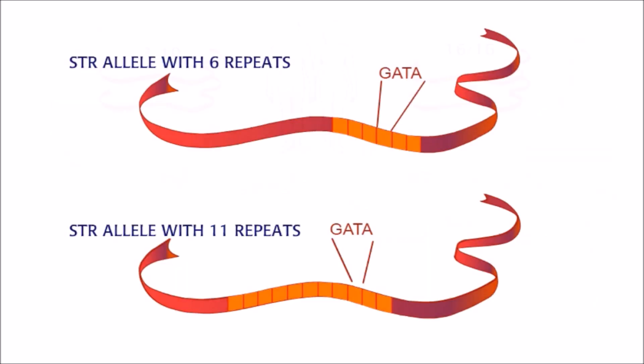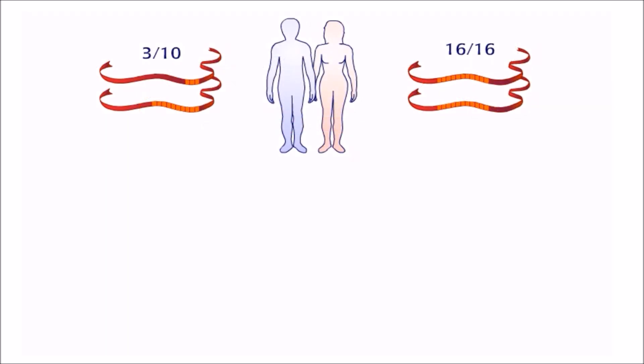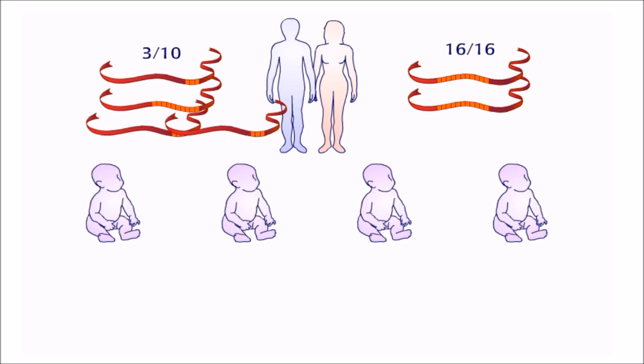At this locus the female inherited the same allele of 16 repeats from each of her parents. She is homozygous.